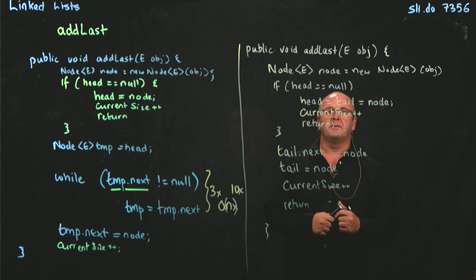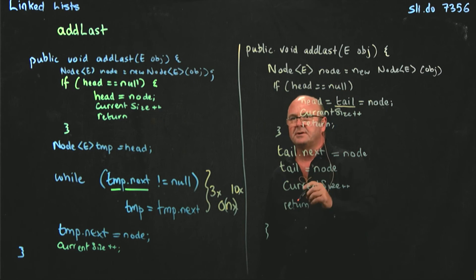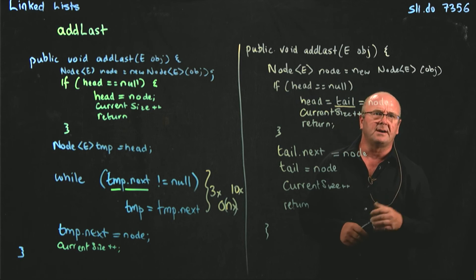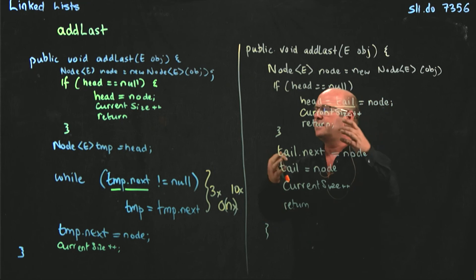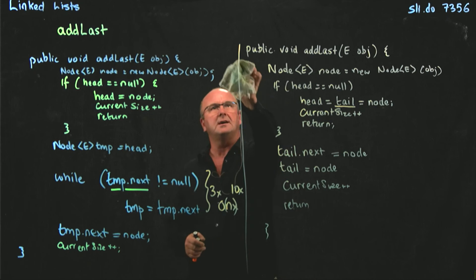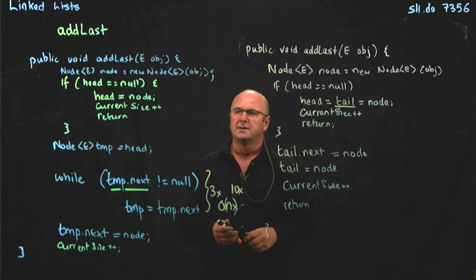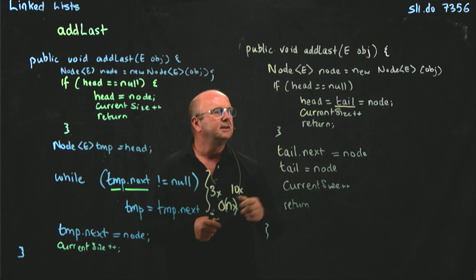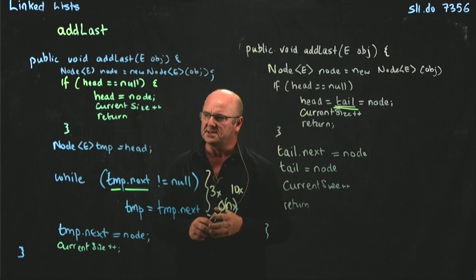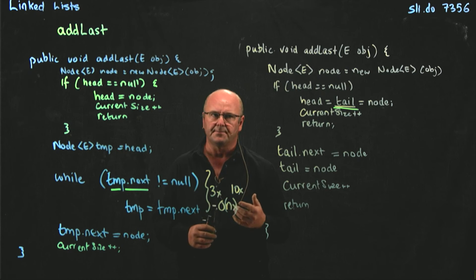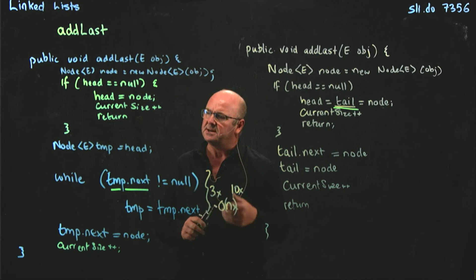You'll need to have a globally scoped tail variable. Remember at the beginning when I talked about having two or maybe three global variables — head and current size. The third is our tail pointer. We need a globally scoped tail pointer of type Node E, just like head. When you initiate your linked list, tail is also going to point to null, just like head does.